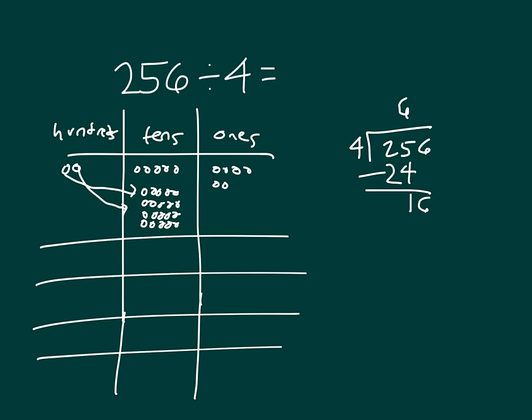Next, I'll bring down the 6. So I had a leftover of 1, which I will regroup back on over to the ones place. And let me continue to show my division work within my place value chart. So there were 6 within each of those groups.